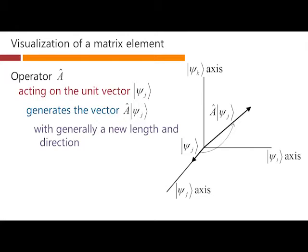And in general, what has happened is the action of A operating on this vector has rotated it to a new direction and given it a new length. There's actually really nothing else that an operator can do, at least in this geometrical analogy here.